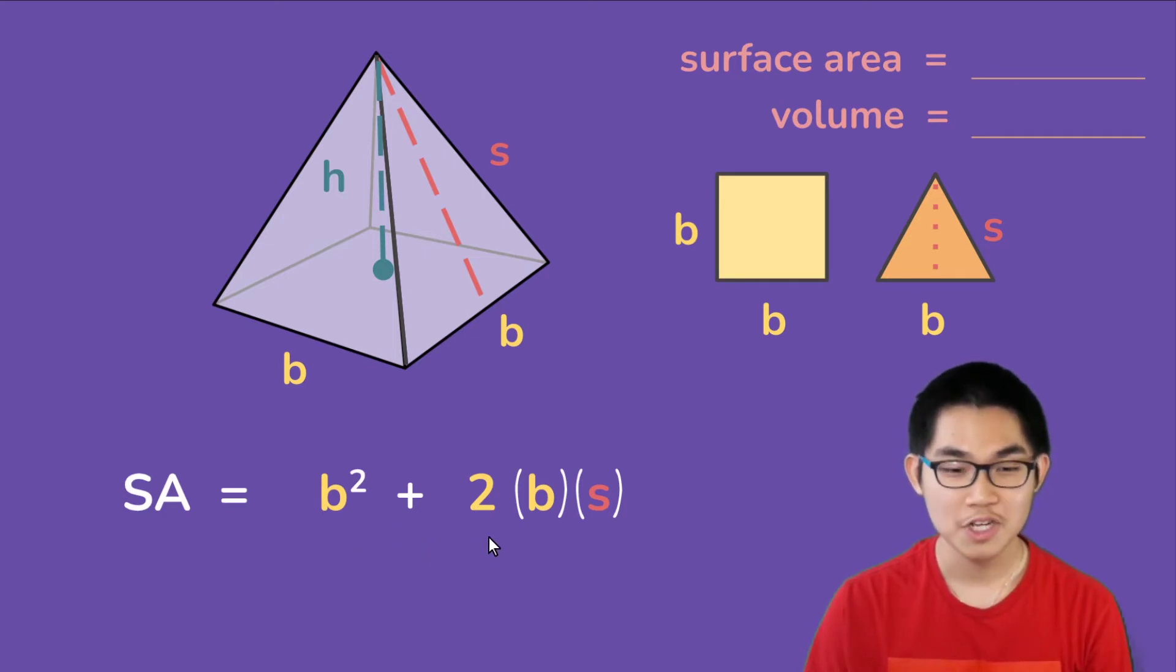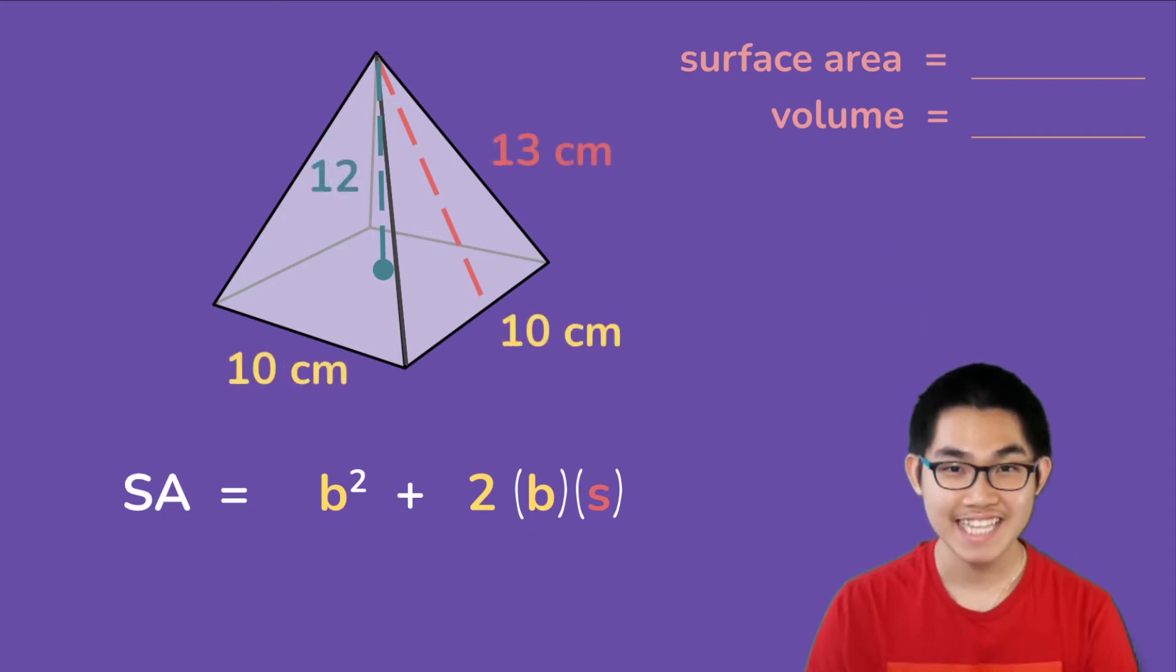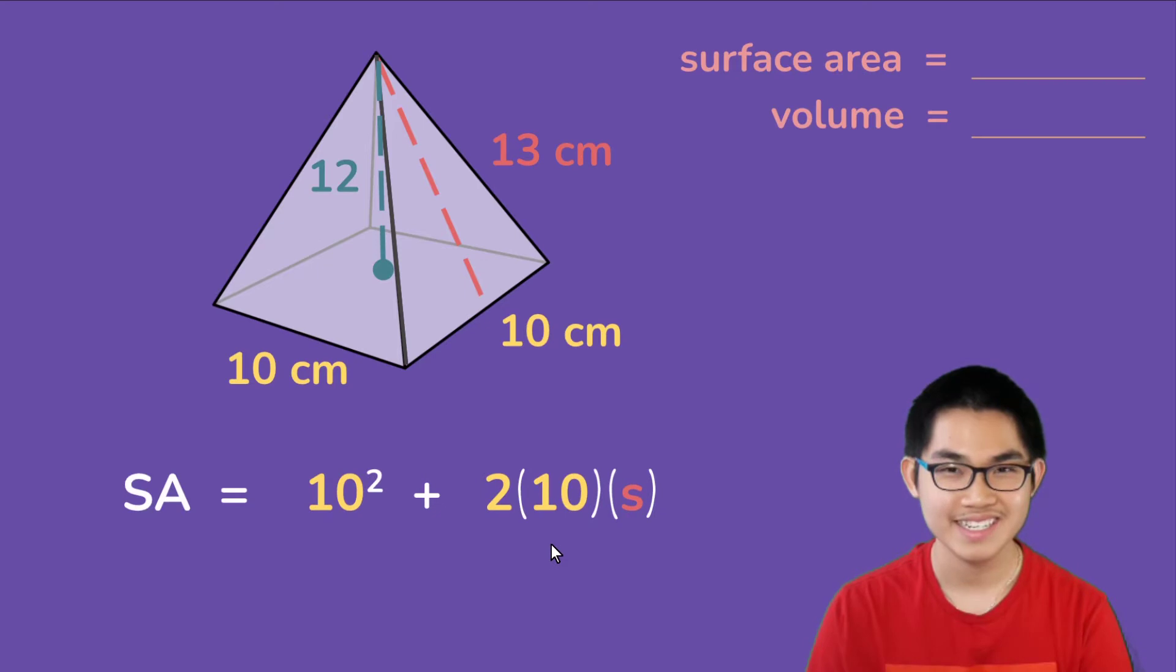Let's say that the base is 10 centimeters, the height is 12 centimeters, and the slant height is 13 centimeters. What is the surface area? So we can use this formula and we know that b is 10, so we can substitute the number 10 into b here and here. Now s is 13.